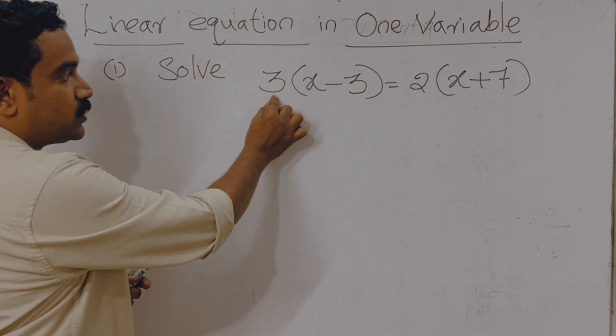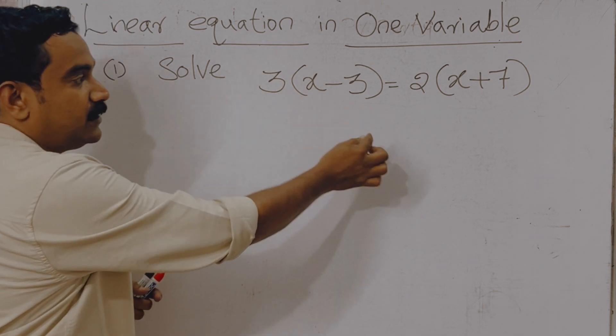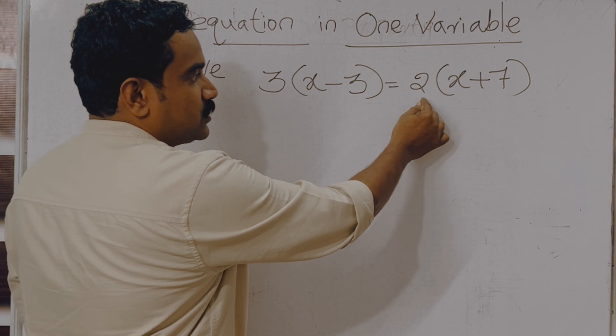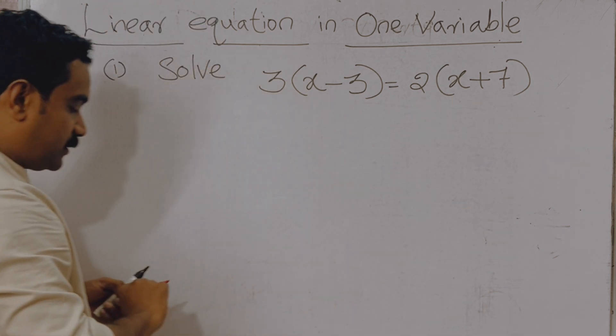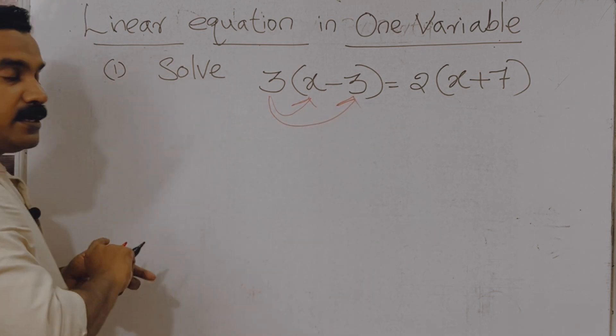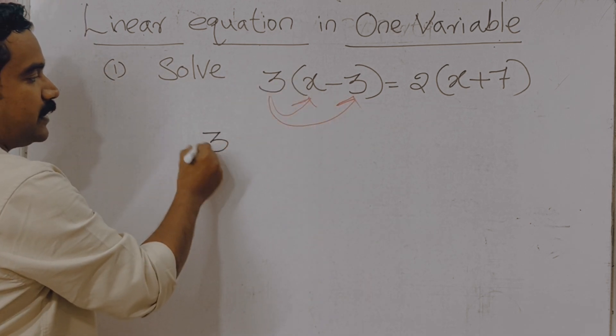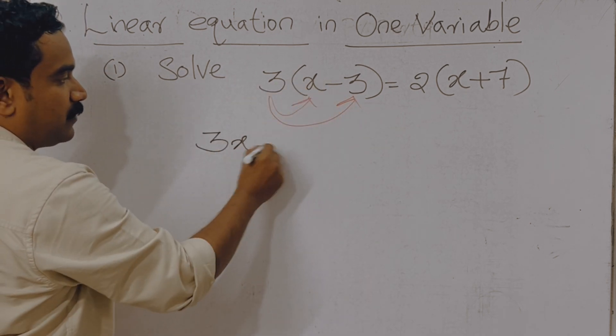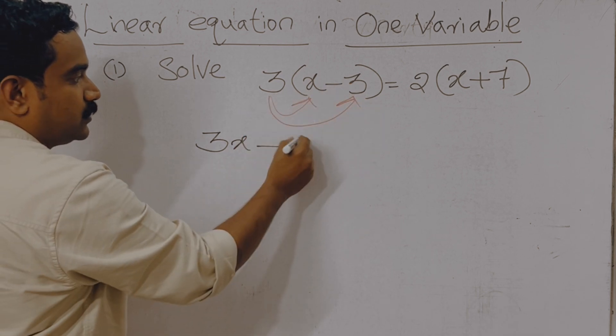Here we need to use distribution of multiplication over subtraction. In right side, we want to do distribution of multiplication over addition. So first you need to multiply 3 and x, then minus 3 into 3. 3 into x is actually 3x, minus, then 3 into 3 equal to 9.